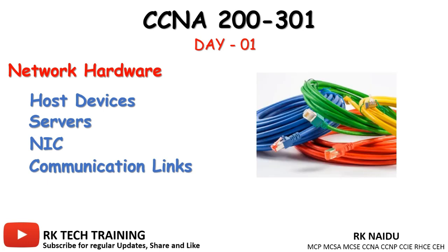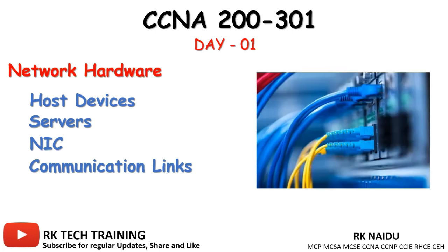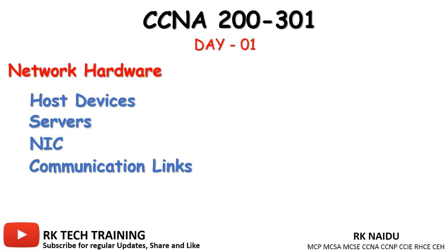Communication Links: there are different types of communication links and cables. On your local network you probably use UTP — Unshielded Twisted Pair — cable. For internet connectivity you might use DSL, which uses the phone line from the telco, or cable internet access which uses coaxial cable like your TV. For long-distance links, a lot of fiber cable is used nowadays. We also use wireless technologies where we use radios, antennas, and radio waves for communication.